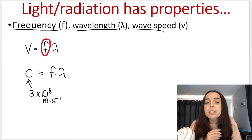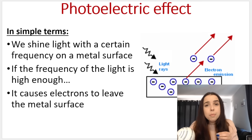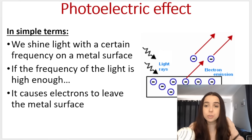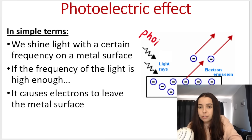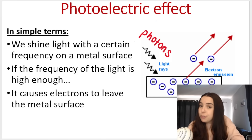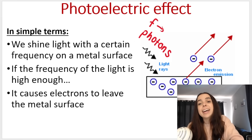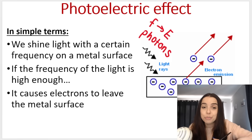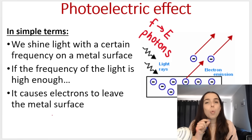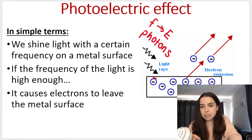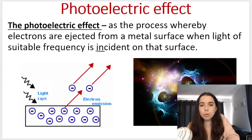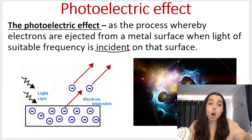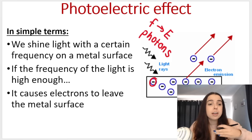Different colours have different frequencies because they have different wavelengths. In simple terms, the photoelectric effect means that when we shine light with a particular frequency on a metal surface, light consists of packets of energy called photons. Photons have a particular frequency, which means they have a particular energy. If the frequency of the light is high enough, it causes electrons to leave and be ejected from the metal surface.